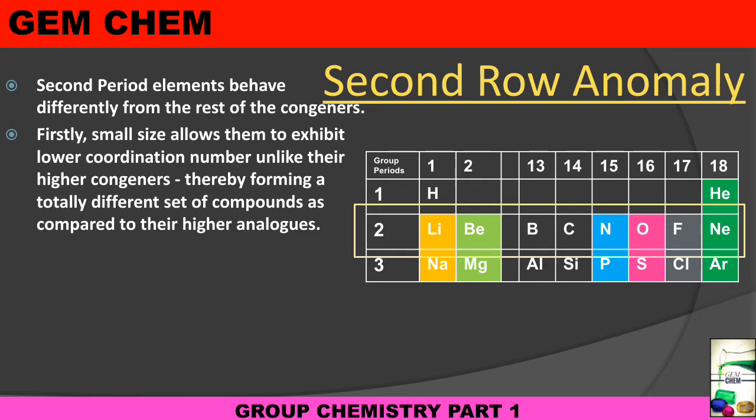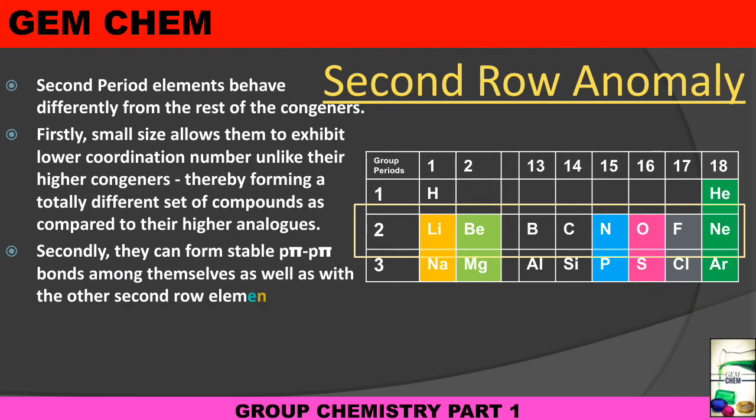of the higher congeners, this pπ bonding is not so strong because their size increases and they are farther apart from each other. So again, there is a totally different set of compound formation for Period 2, and these compounds exhibit different physical as well as different chemical properties compared to their higher analogs.